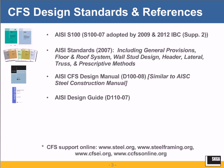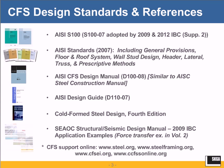There's also the AISI Design Guide, which has numerous examples for doing cold-formed steel design. The latest version is D110-07. And then there's a very good text if you want to get into the interesting history and more detail of the cold-formed steel design provisions — the Cold-Formed Steel Design textbook, fourth edition, a very good reference to have.